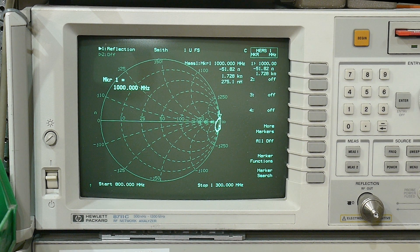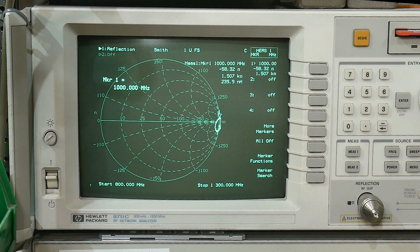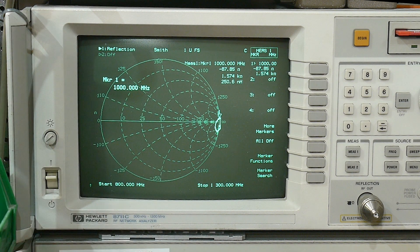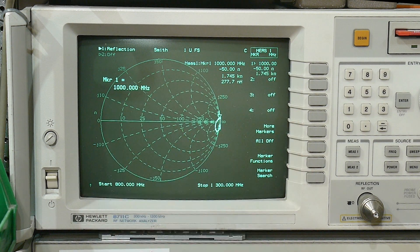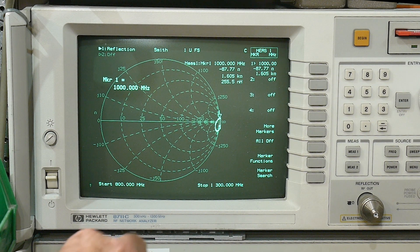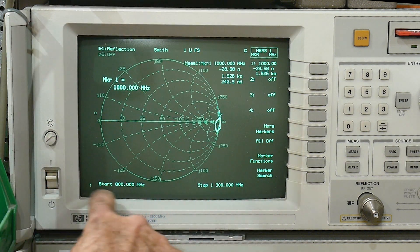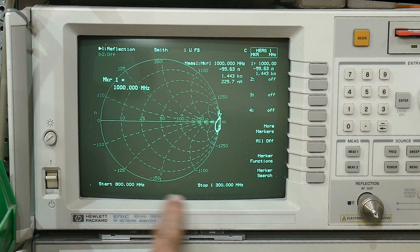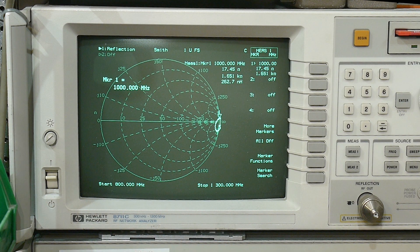So I thought I would expand on what I was doing and show you some examples of coax loss. And so we are going to be using a vector network analyzer. I'm going to be going between 800 and 1.3 gigahertz. All right.